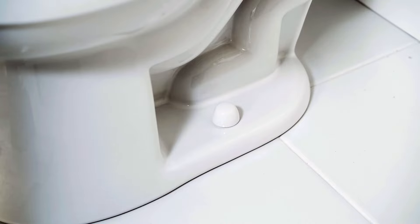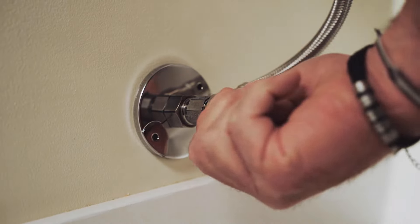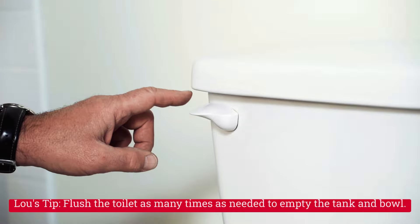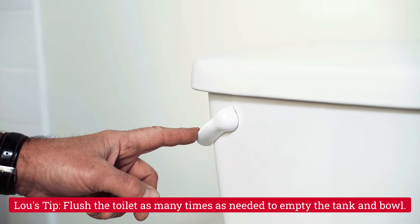You start by turning off the water to the toilet, remove the water line connecting the water service to the toilet tank. Flush the toilet, get rid of as much water as you can.